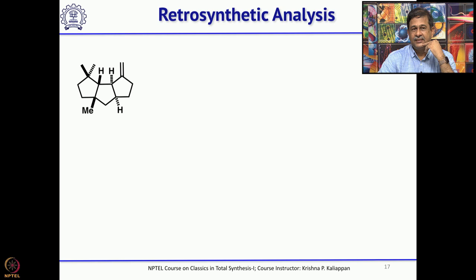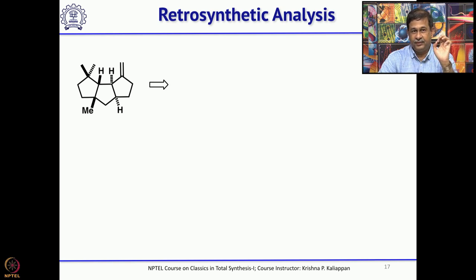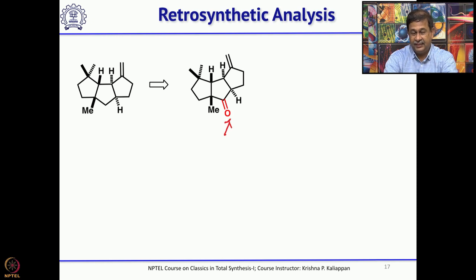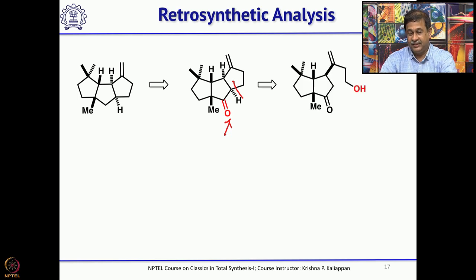Let us see the retrosynthesis. When looking at capnelline, you can introduce a functional group to facilitate retrosynthetic analysis. Here there is a double bond, but that may not be sufficient for a proper retrosynthetic analysis to get a simpler starting material. Oyehara introduced a carbonyl group at the middle ring. The idea is: with a carbonyl group, one can do an intramolecular alkylation — making this a good leaving group, generating an anion, and forming the third 5-membered ring.